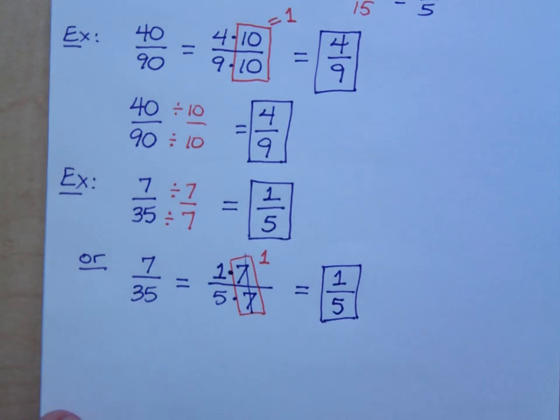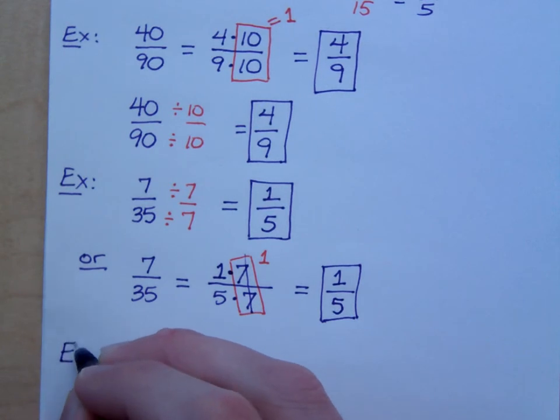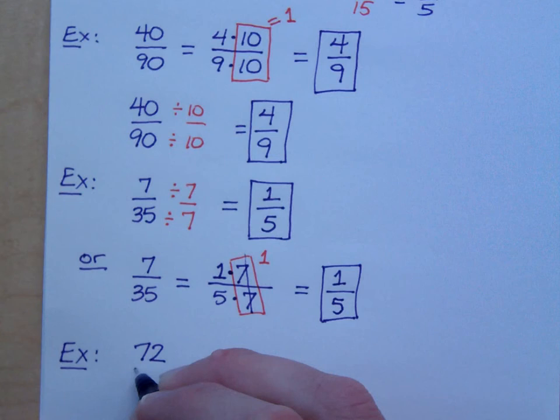Okay, let's do one more. Let's do 72 over 84.